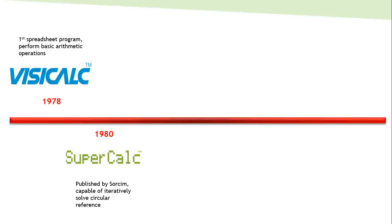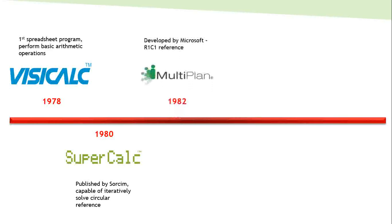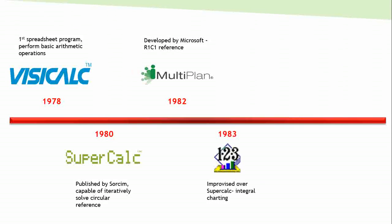In 1982, MultiPlan was developed with the concept of R1C1 notation, while SuperCalc used the A1 concept. In 1983, Lotus 1-2-3 came up and it had integral charting functions.